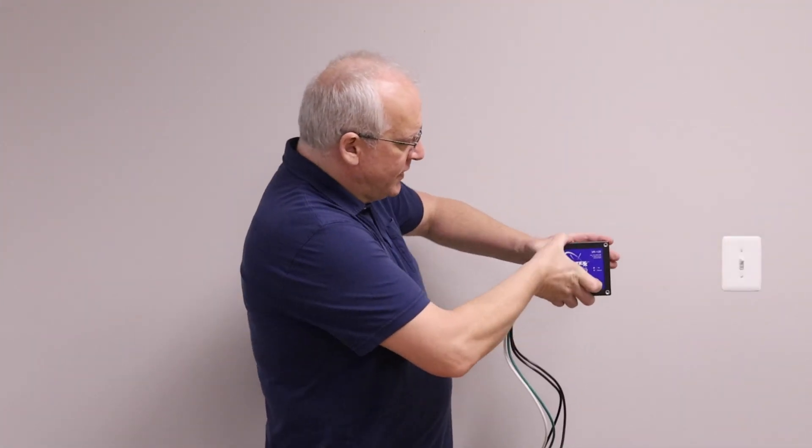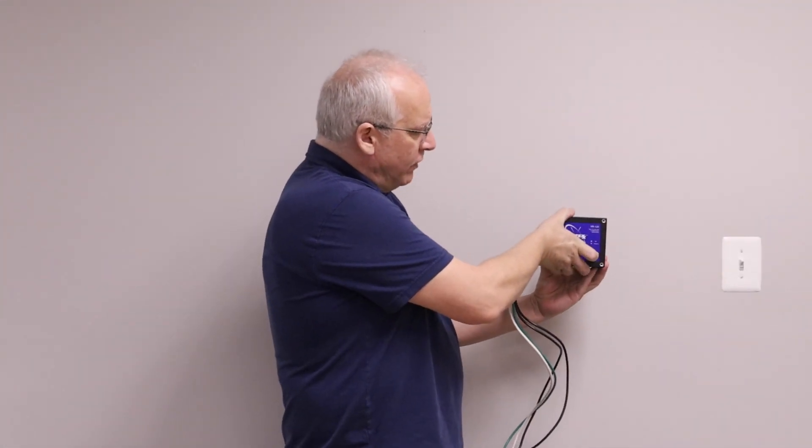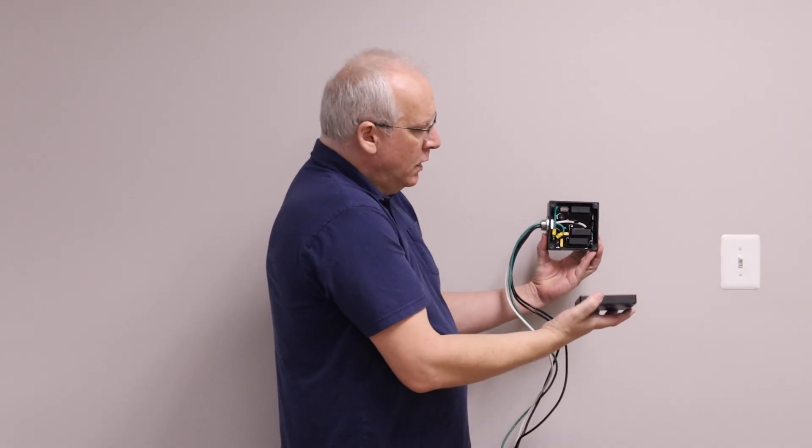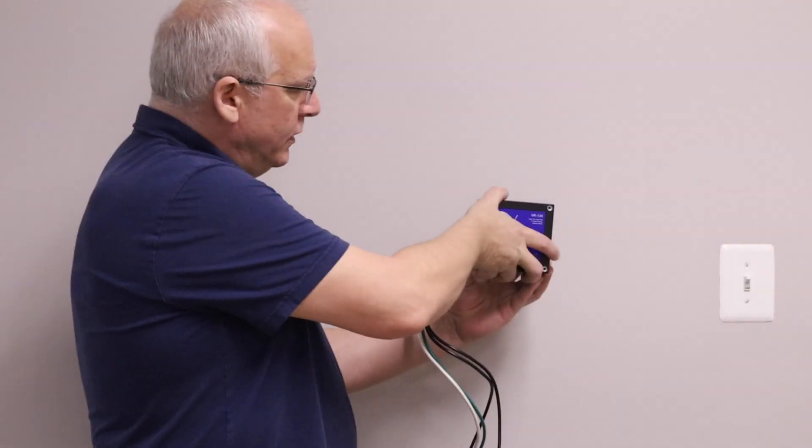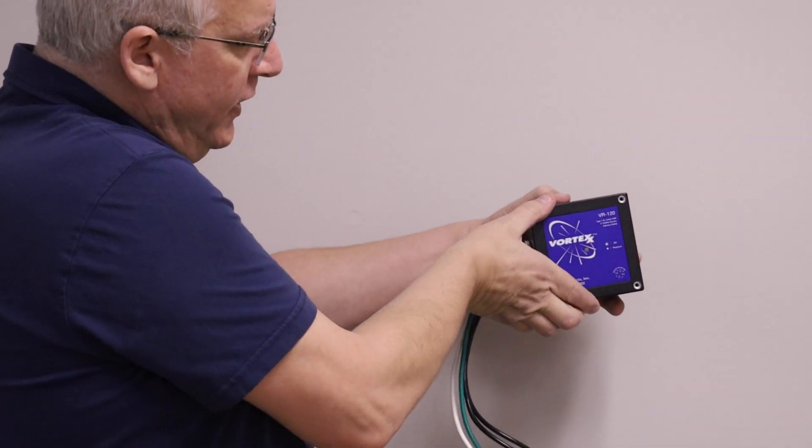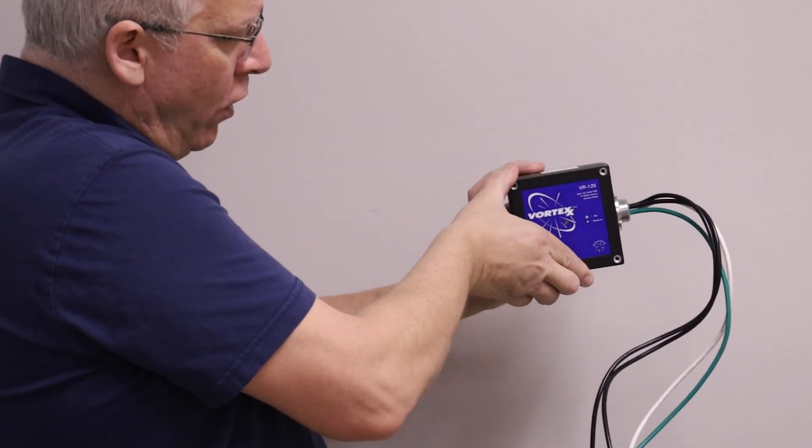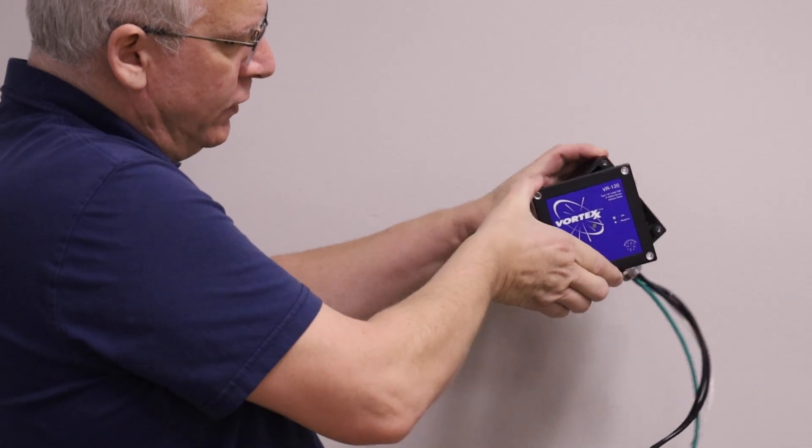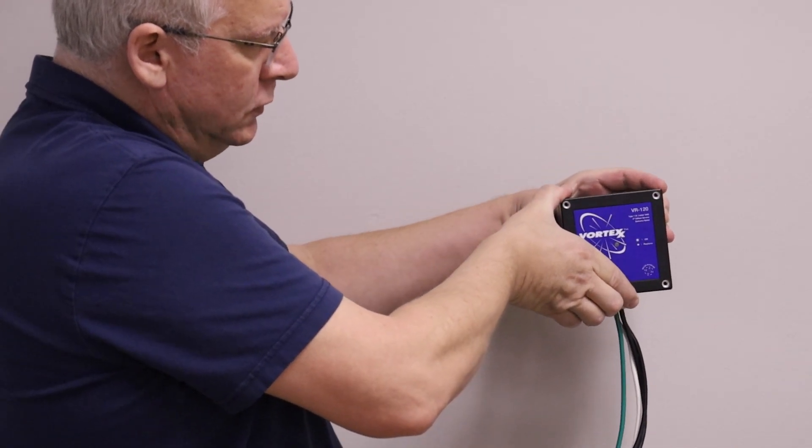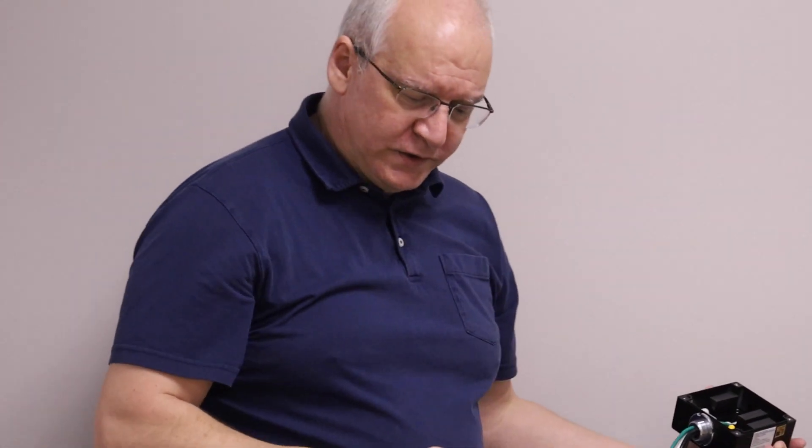The first thing I want to mention is that the Series R has a removable cover that can be repositioned so that the label is always upright regardless of how the surge protector is installed for a more professional looking installation.